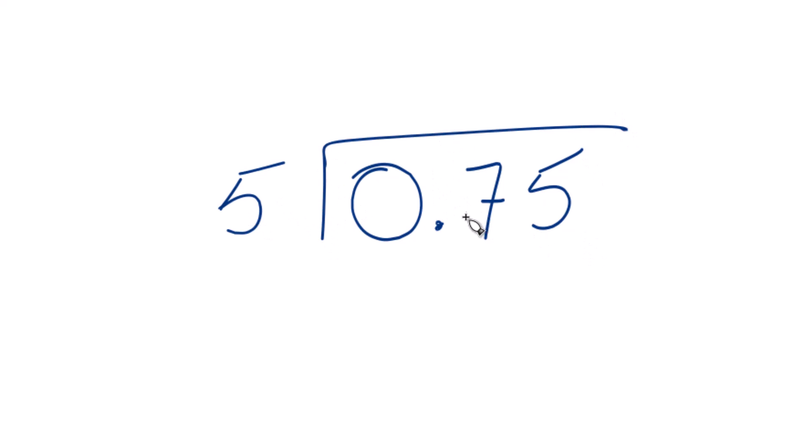So 5 doesn't go into 0, so we'll just move the decimal point over here, and then we can just call this 0 point. So 1 times 5, that's 5, so that works. We subtract, we've got 2. We can bring the 5 down.